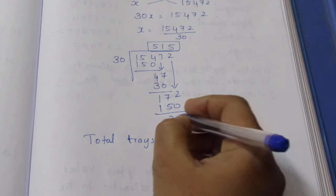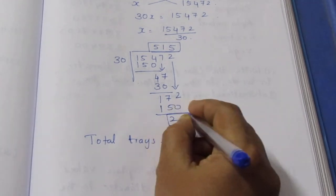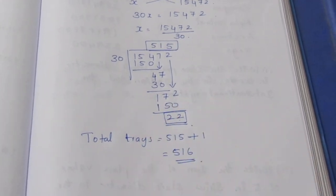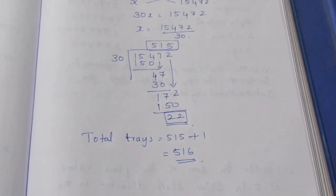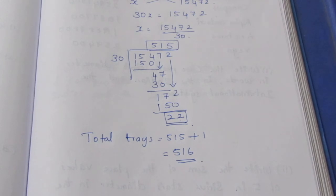Why 516? Because we have 22 extra eggs as balance remaining, so we need one more tray to store those 22 eggs. That is the answer to this sum. Thank you.